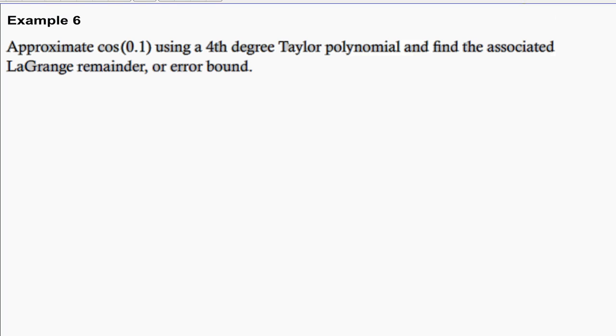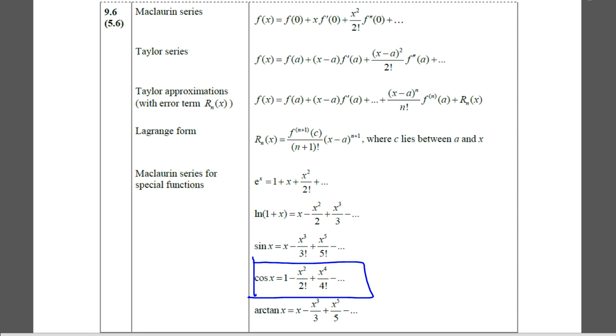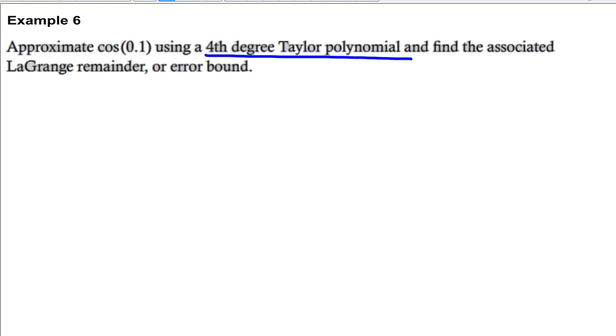In this question, we are required to approximate cos 0.1 using a fourth degree Taylor polynomial and find the associated Lagrange remainder. Now you can use the Maclaurin series for cos x from your formula booklet to approximate the value of cos 0.1 because 0.1 is close to 0. Remember, Maclaurin series is Taylor series centered at 0.